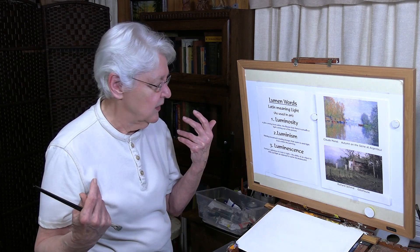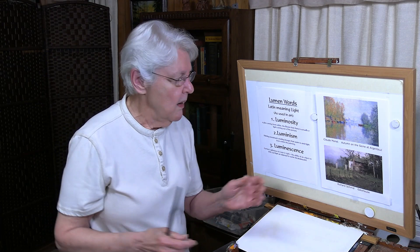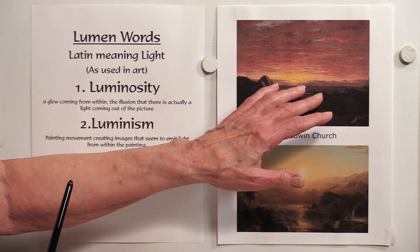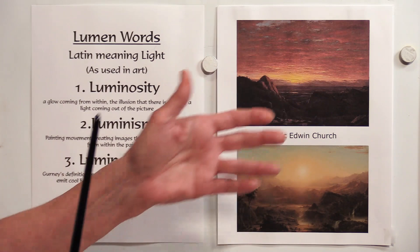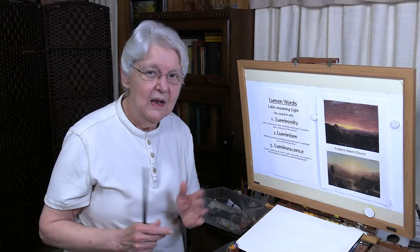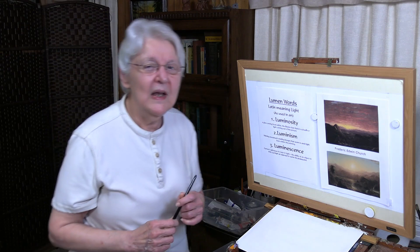When we go to the word luminism, we get into something totally different, because that defines an art movement — an art movement where artists were intentionally dealing with light and intentionally trying to create a kind of vibration in their paintings that we can see when the light, especially the low light, has many colors together causing the whole thing to feel luminous. There is a difference between luminism and luminosity. All luminists created luminosity in their paintings, so a painting can have luminosity but not be part of the luminism movement.